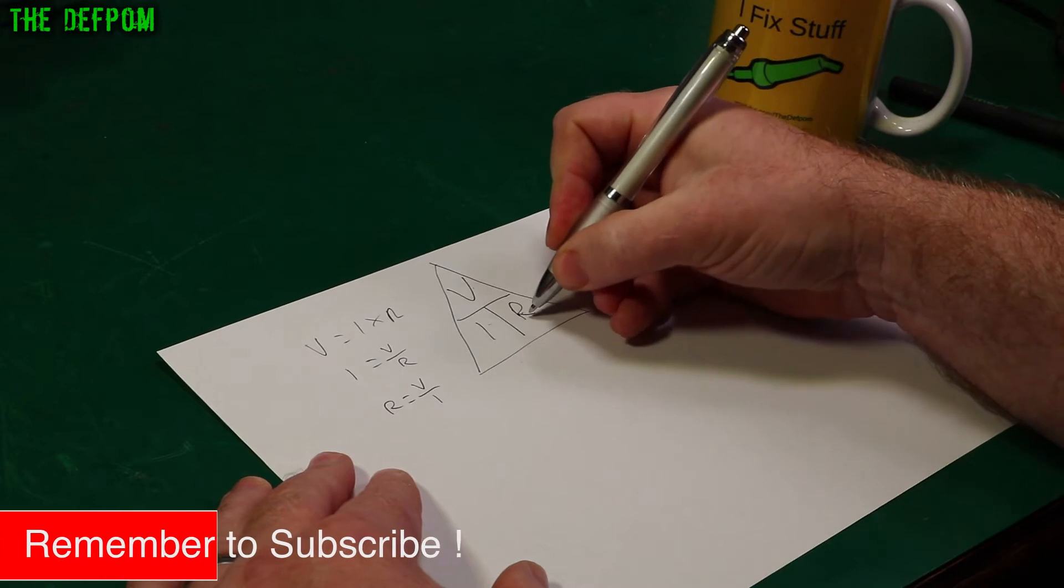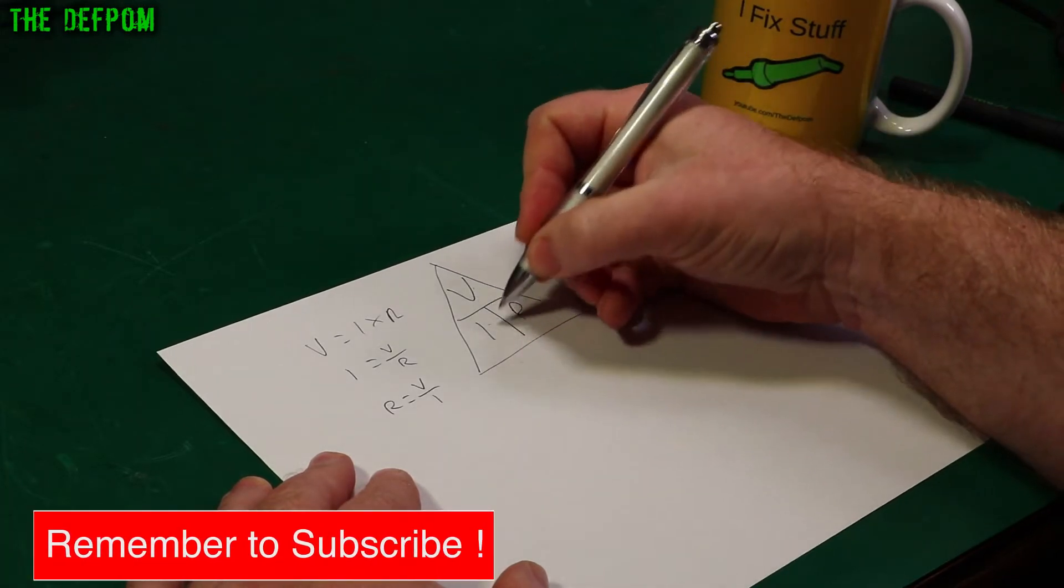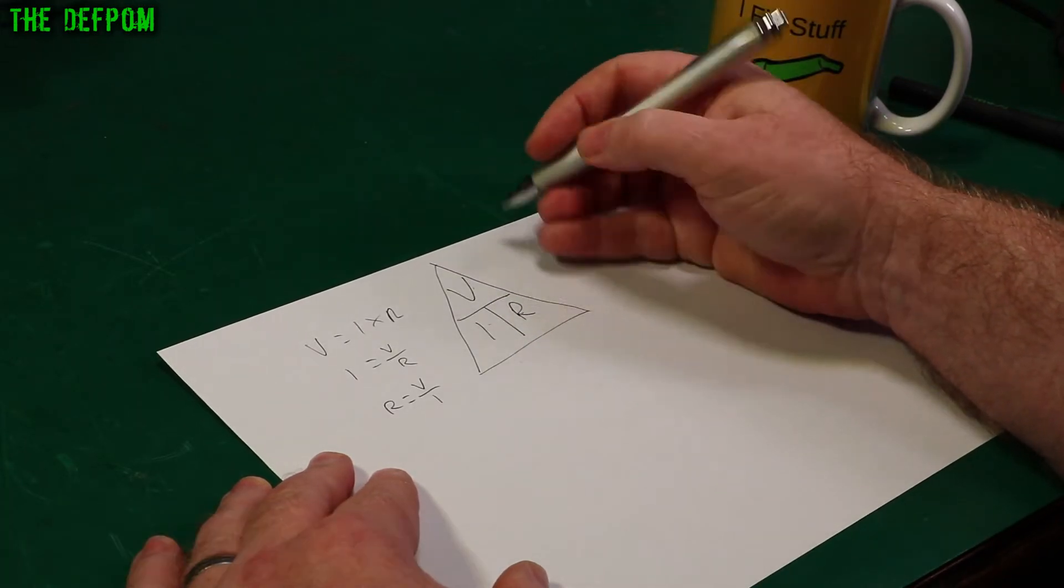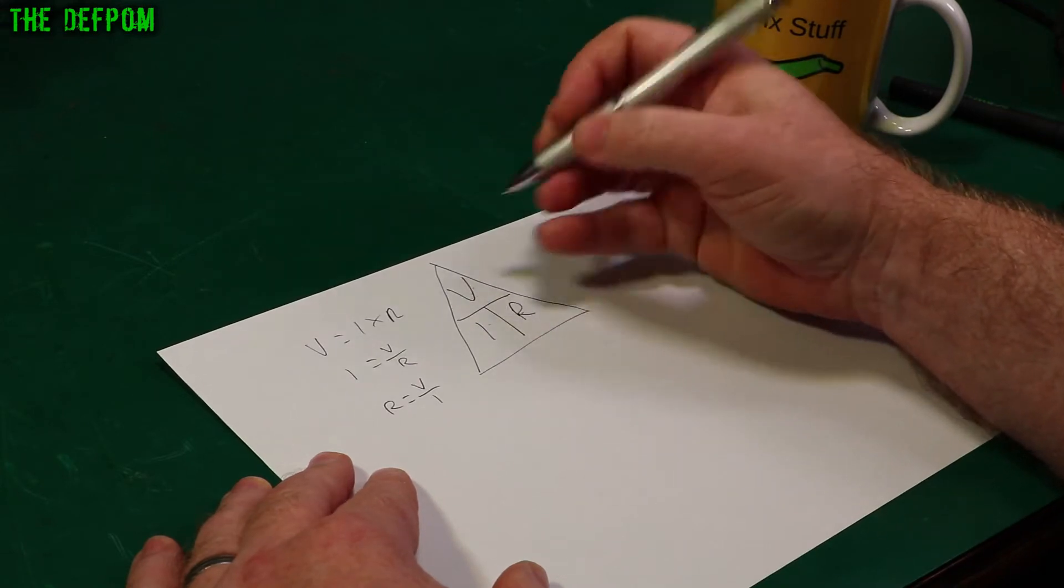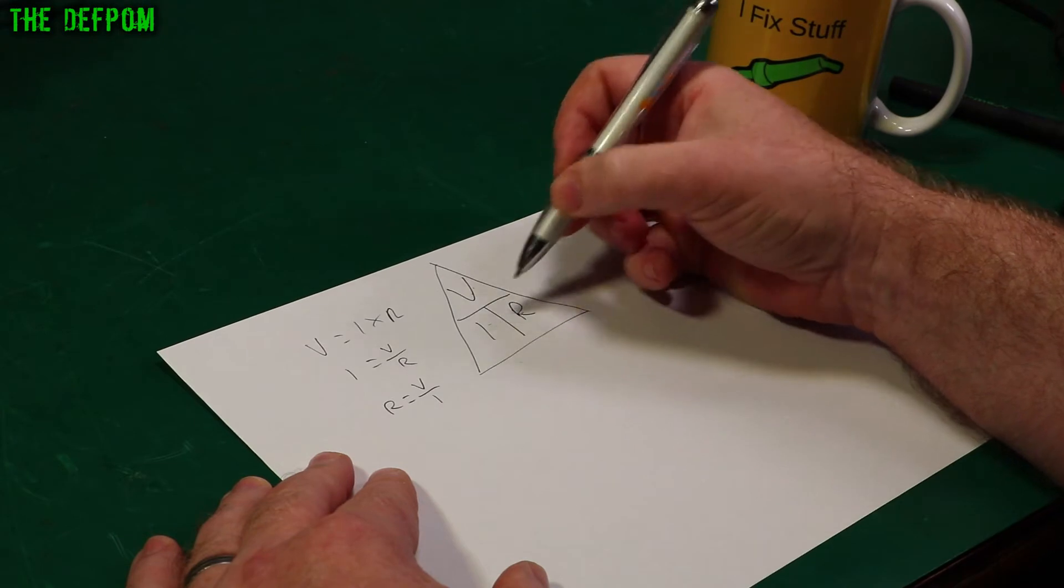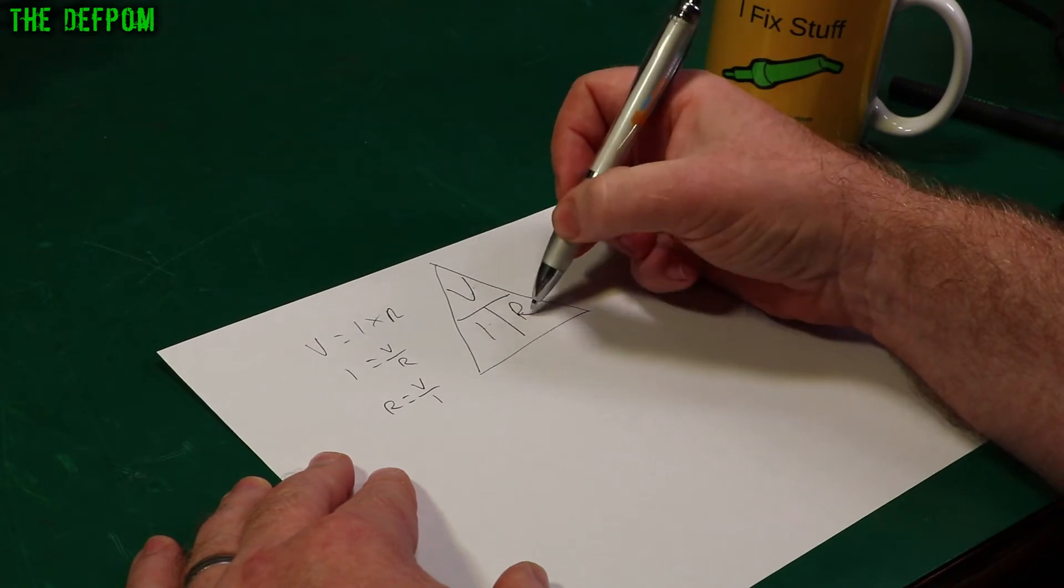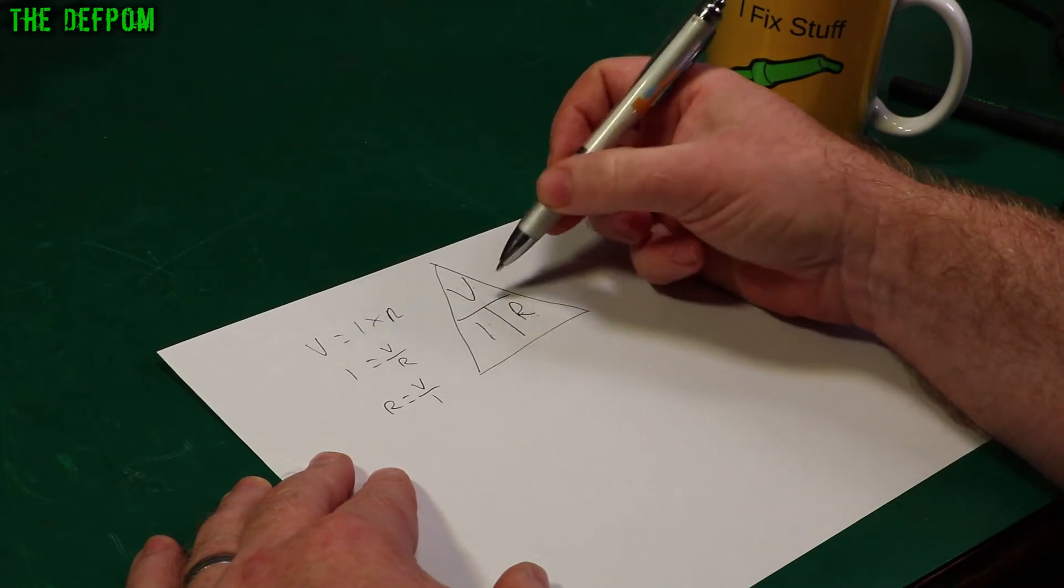So if you want to know resistance and you know the voltage and the current, you can look at the resistance. If you need to know the current and you know the voltage and the resistance, you can work that out. Voltage divided by resistance gives you the current. Voltage divided by current gives you resistance. Current times resistance gives you voltage.